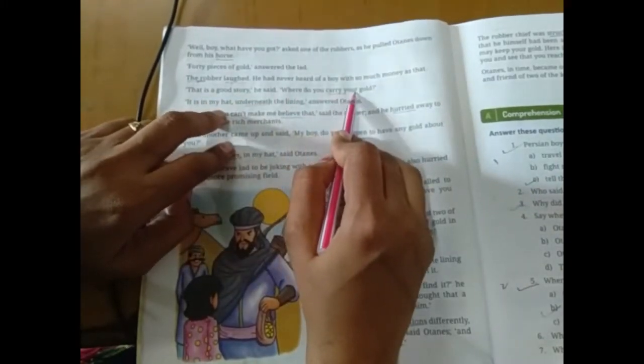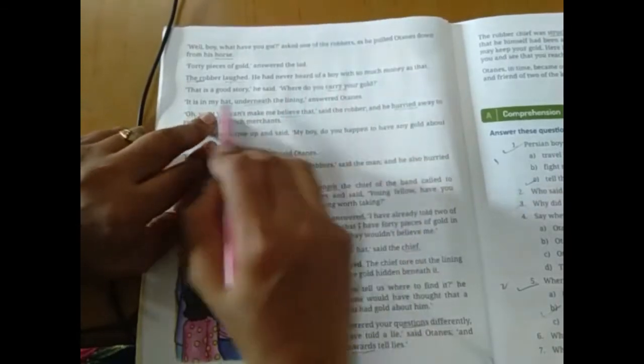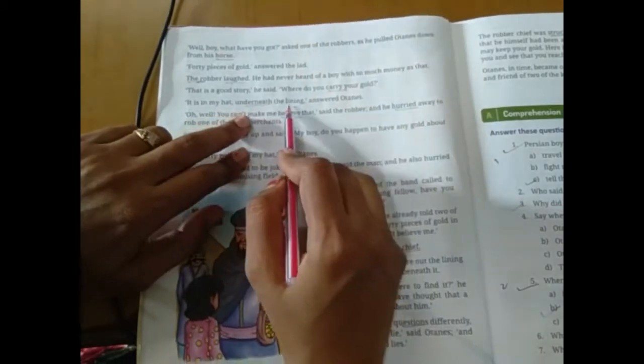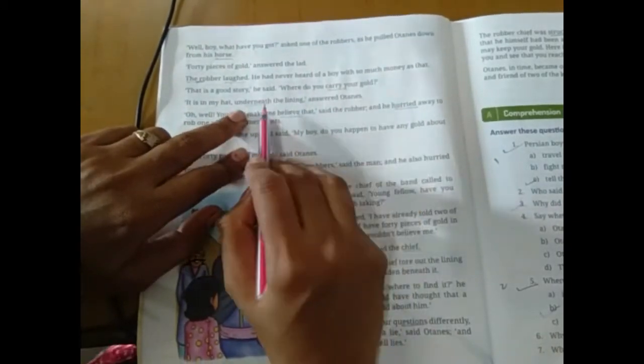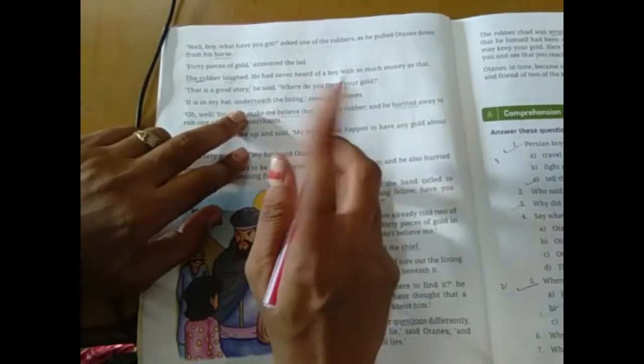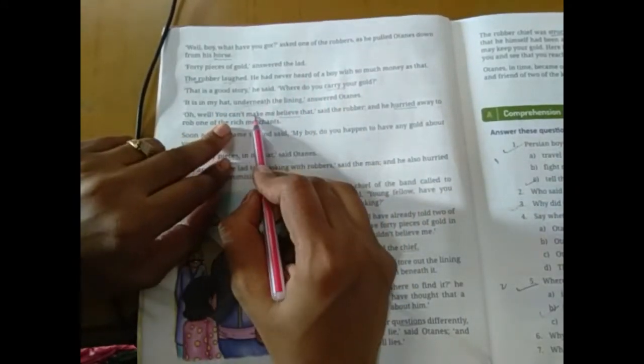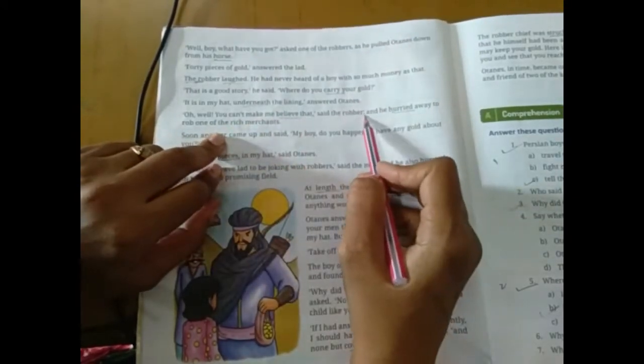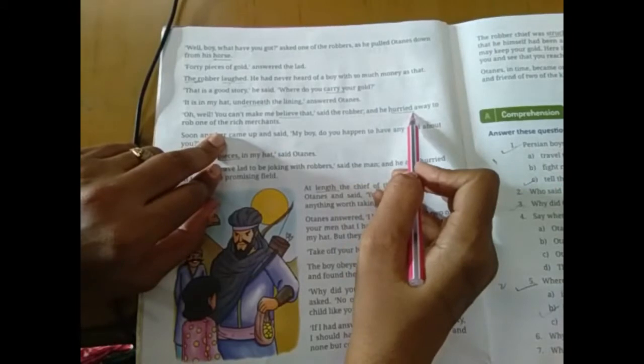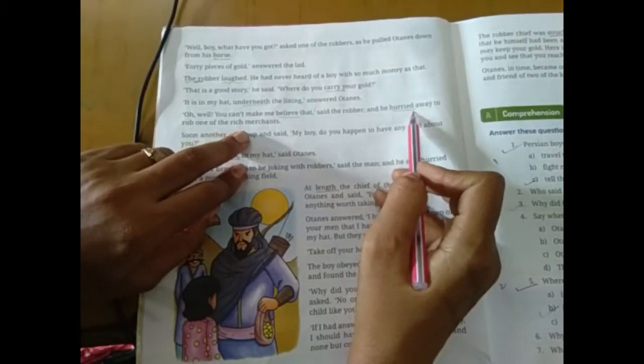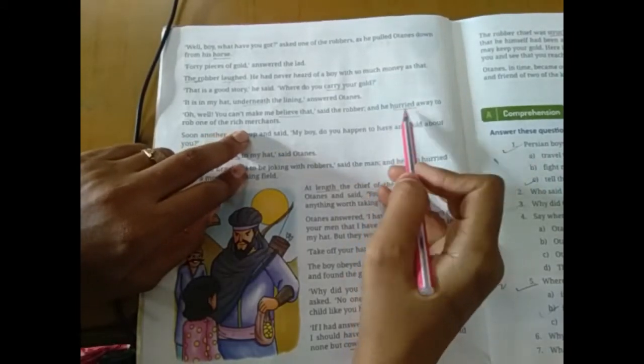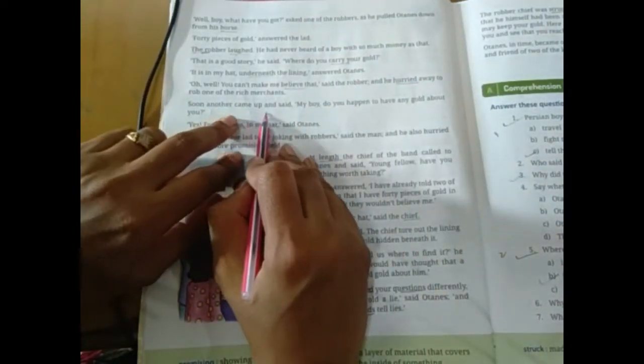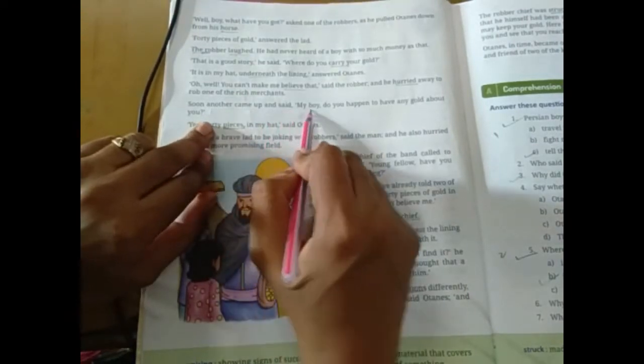Where do you carry your gold? Kaha pe tune bachha hai? It is in my head. Okay, bole mere head ke andar. Under me, the lining. Answer the okay. Bachhe ke kehta hai mere head ke andar hai jo lining hoti hai andar, aab meine chupa ke bachhi. Oh well, you can't make me believe that. Of the rich merchant. So, biswas hi ho, aisi hi ho, dusre merchant ke paas chala ja.